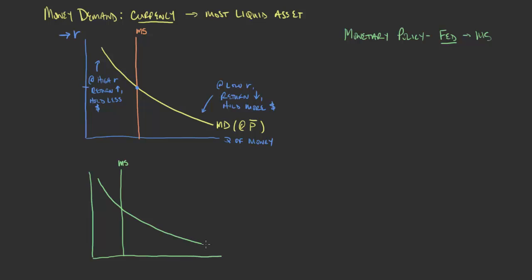We've got money supply as a result of Fed action, and money demand here at a given price level, holding that constant. On the x-axis we're looking at quantity of money — in the American case, dollars, currency — and on the y-axis we're looking at the interest rate. What would happen if the Federal Reserve decided to increase the money supply?